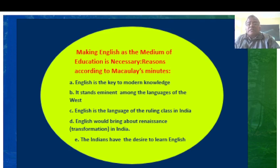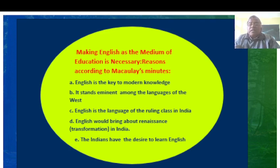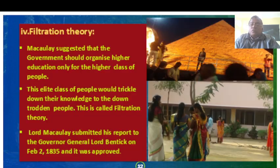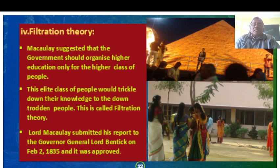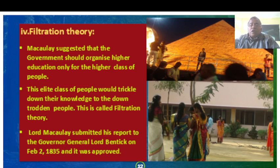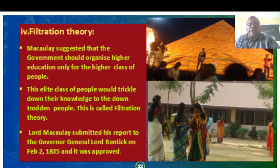Macaulay argued that making English the medium of education is necessary. His reasons: English is the key to modern knowledge; it stands eminent among the languages of the West; English is the language of the ruling class in India; English would bring about renaissance and transformation in India; and Indians themselves have the desire to learn English. He also proposed the famous filtration theory — that the government should organize higher education only for the higher class of people, who would then trickle down their knowledge to the downtrodden. Macaulay submitted his report to Governor General Lord Bentinck on February 2, 1835, and it was approved.